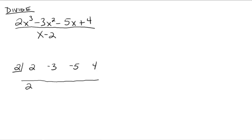Now you take what's inside the box and what's below the line and multiply those two numbers together. So 2 times 2 gives you 4. That goes above the line in the next column over. Then you add those up — 4 plus negative 3 gives you 1. Then you repeat: take what's inside the box, 2, and what's below the line, which is 1. So 2 times 1 gives you 2. That 2 goes in the next column over above the line. Then you add those up — negative 5 plus 2 gives you negative 3.